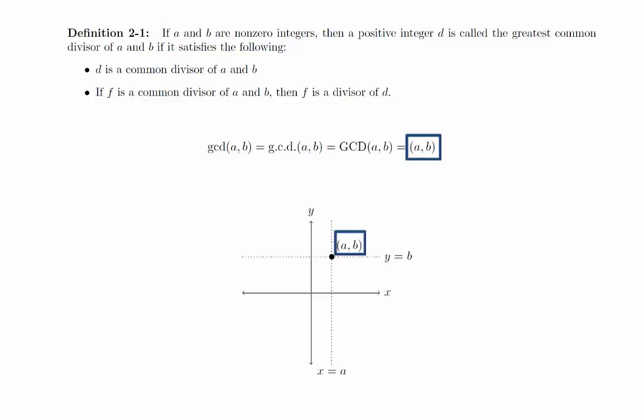The last notation is worth paying attention to because it has a lot of practical generalizations and is commonly used elsewhere in mathematics, though it's easy to confuse with a point on the plane. In the next video, we will look at a method for computing the greatest common divisor of two integers known as the Euclidean algorithm. It will turn out that the Euclidean algorithm gives us even more useful information than just the GCD.